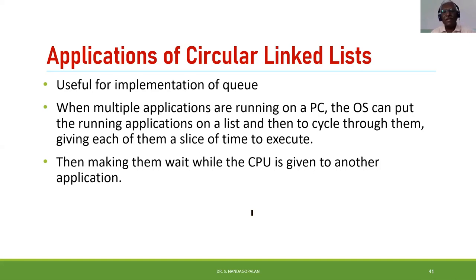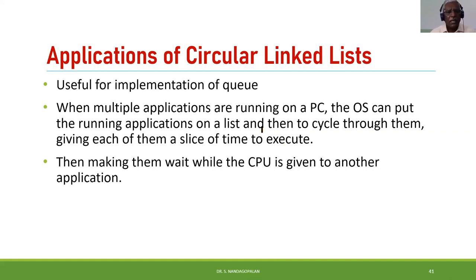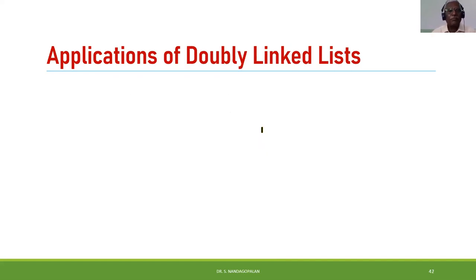Where is circular linked list useful? When multiple applications are running on a PC, the OS can put the running applications in a circular list and cycle through them — ensuring they work in a round-robin, circular fashion. This is mainly useful in operating systems.